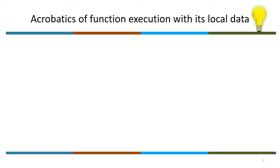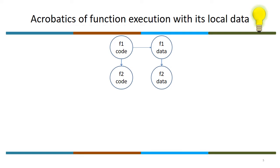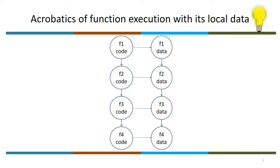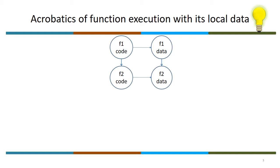Now we look at the acrobatics of function execution with its local data. While a function executes, it must carry along the data associated with it — f1 code accesses f1 data. When f1 invokes f2, f2 also brings along its own data. When f2 is executing, it should only access f2 data — it is incorrect for f2 to access f1 data. When f4 finishes, the execution control goes back to f3 and f3's data unwinds accordingly.